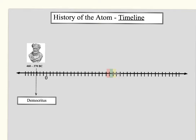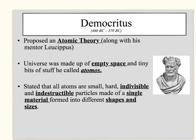Democritus lived from 460 to 370 B.C. He proposed an atomic theory along with his mentor Lysipides, and basically what he said was that the universe was made up of empty space and tiny bits of stuff that he just called atomos.